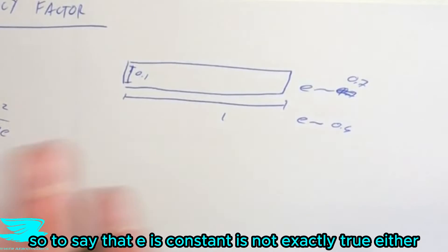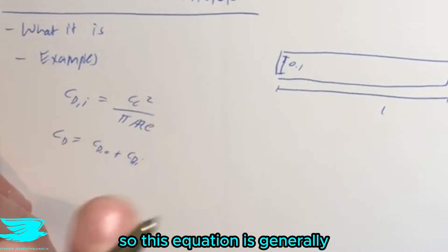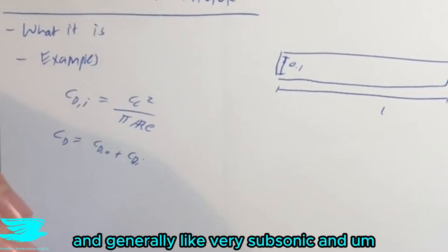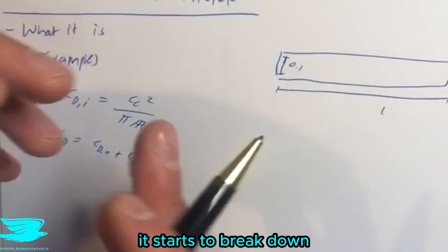So to say that E is constant is not exactly true either. So this equation is generally true for fairly restricted operating conditions and generally like very subsonic and like general aviation purposes. Once you start going out of those boundaries, they start to break down.